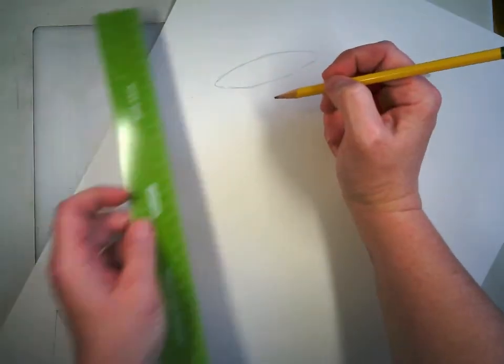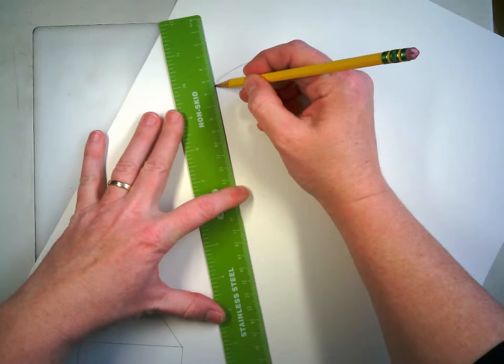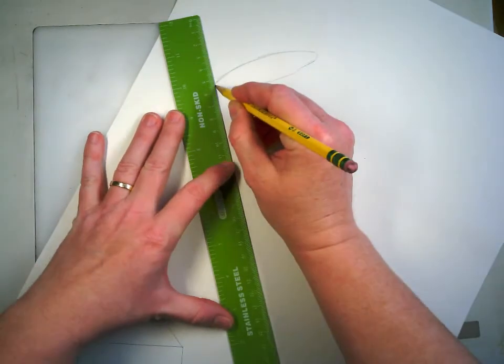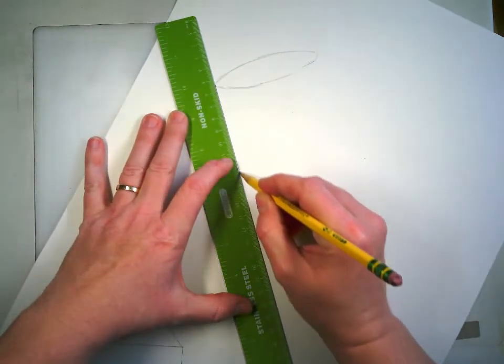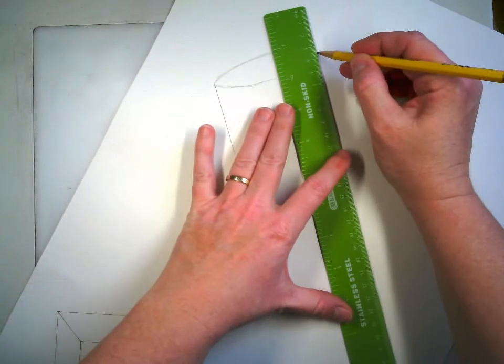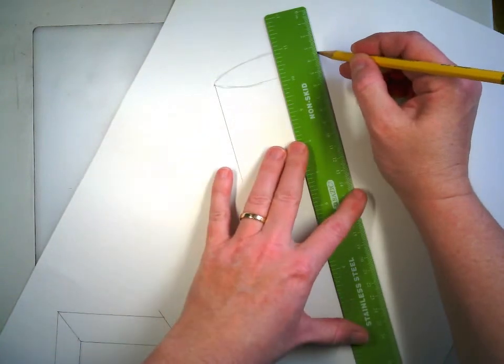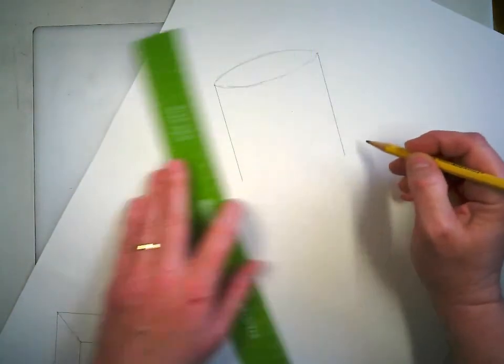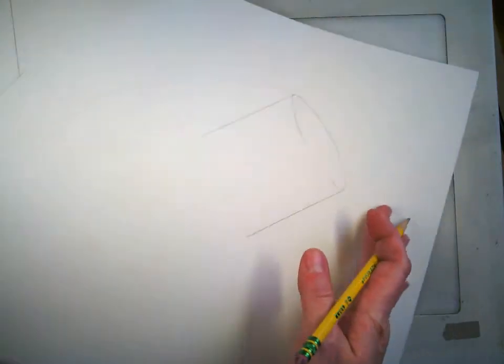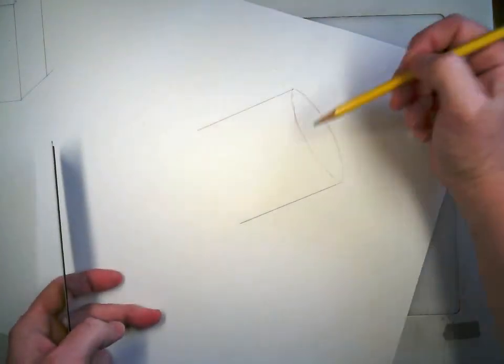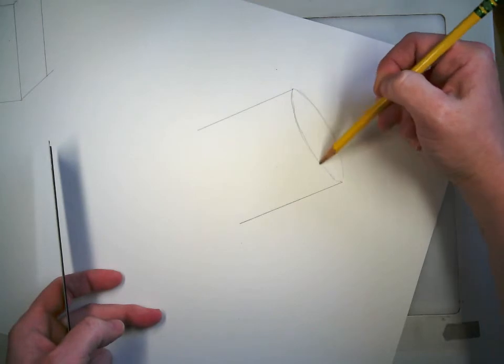And then I'm going to do the straight edges down. And then I'm going to put a pair of the bottom, which is going to be parallel to this curve here.